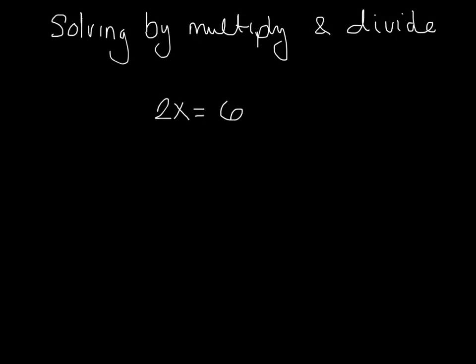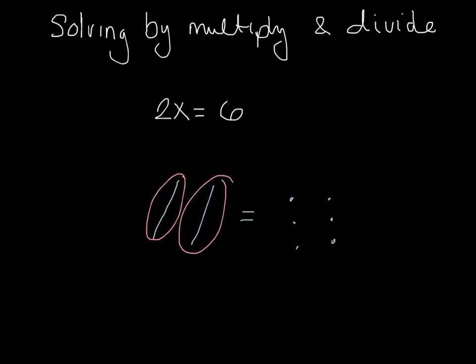However, what 2x really means is that we have two groups of X. So if we're looking at algebra blocks, I have two X's and on the other side I have six green guys. Our idea is always the same when solving an equation — I'm trying to figure out what one X is, but I have two of them. So I want to split them into two groups. If I circle three in each group, I have the same number in each group — I split them up exactly evenly. Now I can see that one X equals one group of three.